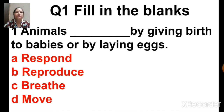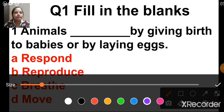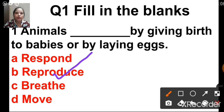Let us start the revision. The first question is fill in the blanks: animals dash by giving birth to babies or by laying eggs. For fill in the blanks, choose the correct option. The options are respond, reproduce, breathe and move. The correct answer is B — reproduce. Animals reproduce by giving birth to babies or by laying eggs.